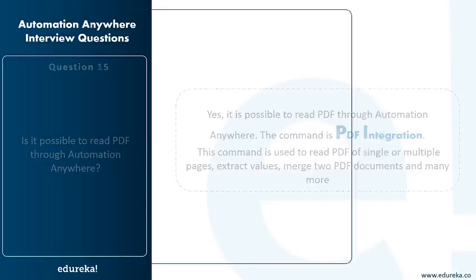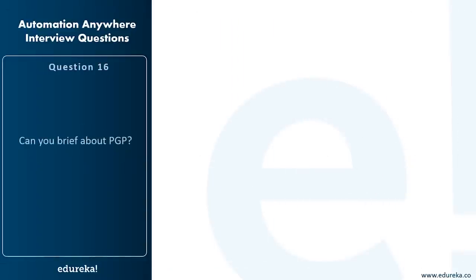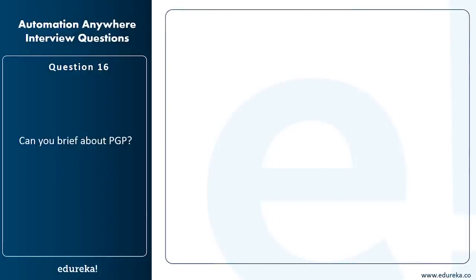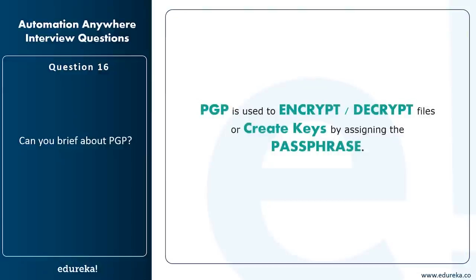Can you brief about PGP? PGP is a command/activity in Automation Anywhere that is used to encrypt or decrypt files, or create keys by assigning a passphrase.